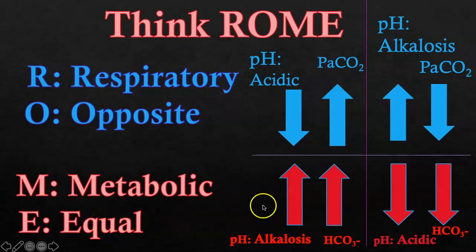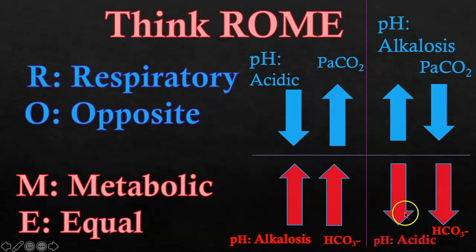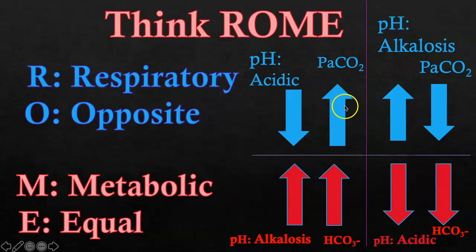If you think of a metabolic issue, the arrows are facing in the same direction. So in metabolic alkalosis, the pH is going to be on the high end of the spectrum and the bicarb is also going to be elevated — remember, bicarb is basic. And when the pH is low, the bicarb is low, because if you don't have anything to make the bloodstream basic it's not going to be alkalotic. Just remember the arrows and which direction they face.